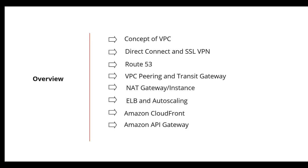In this tutorial we'll start with the concept of VPC, then we'll talk about Direct Connect and SSL VPNs, the DNS service called Route 53, peering multiple VPCs and Transit Gateway, NAT instance and NAT gateway, load balancing and auto scaling services, then content delivery services called Amazon CloudFront, and finally Amazon API Gateway.